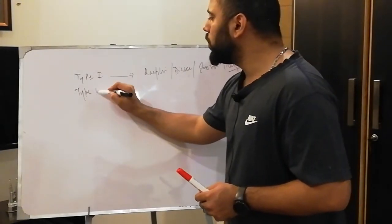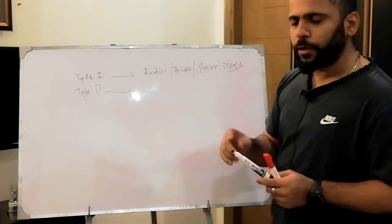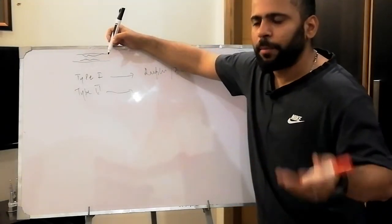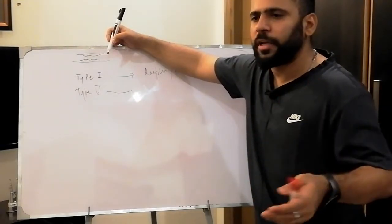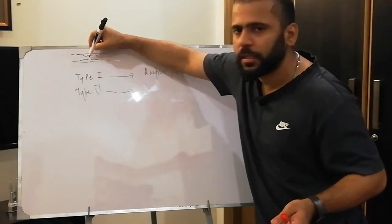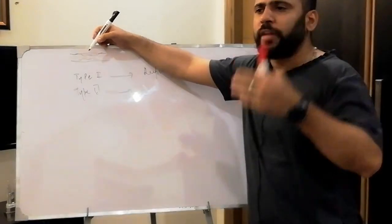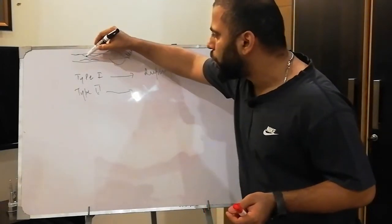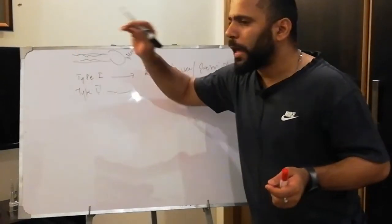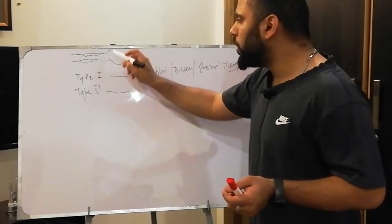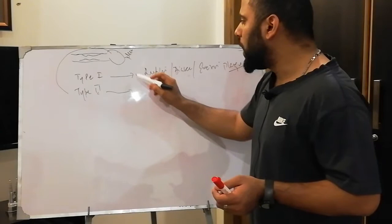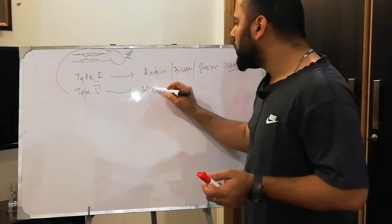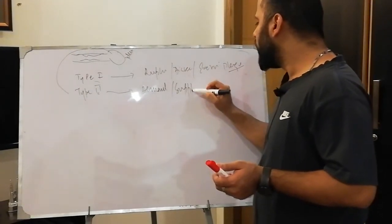Type 2 MI occurs because high-risk patients — such as smokers, diabetics, those with hypertension, family history, and hypercholesterolemia — always have plaques. Anything which raises the demand of the heart creates a demand-supply mismatch. The heart needs more blood, but because of partial occlusion the body cannot supply enough, so this is called Type 2 MI due to demand-supply mismatch.